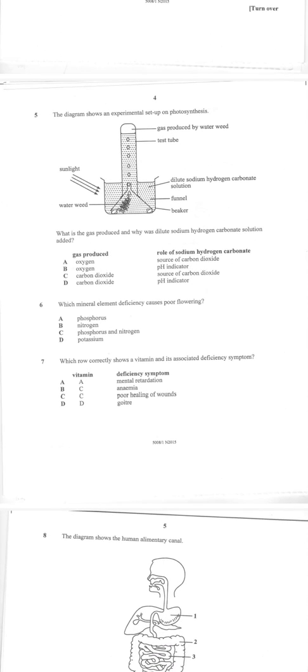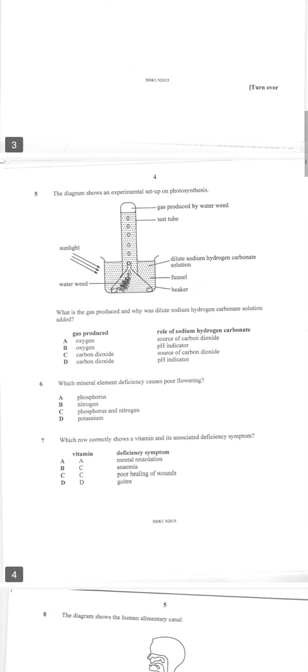When we go to question number five, we have another experimental setup and we have got a gas that is produced. We are told it's photosynthesis, and we know that the gas produced during photosynthesis is oxygen. The role of sodium hydrogen carbonate there is a source of carbon dioxide.